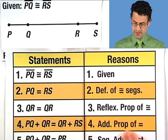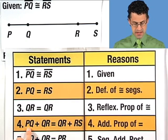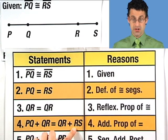Applying the additive property of equality, we see that PQ plus QR equals QR plus RS.